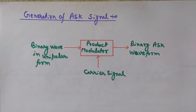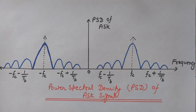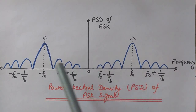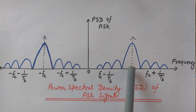Now let's analyze the power spectral density of the ASK signal. Modulation causes a shift of the baseband signal spectrum. Since the ASK waveform is the product of the binary sequence and the carrier wave, it has a power spectral density (PSD) the same as that of the baseband on-off signal, but shifted in the frequency domain by plus and minus fc. There are two impulses at plus fc and minus fc in the power spectral density.